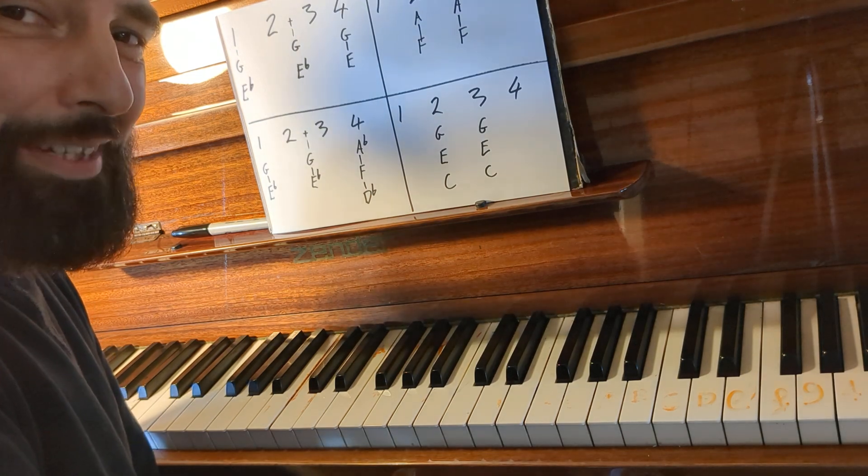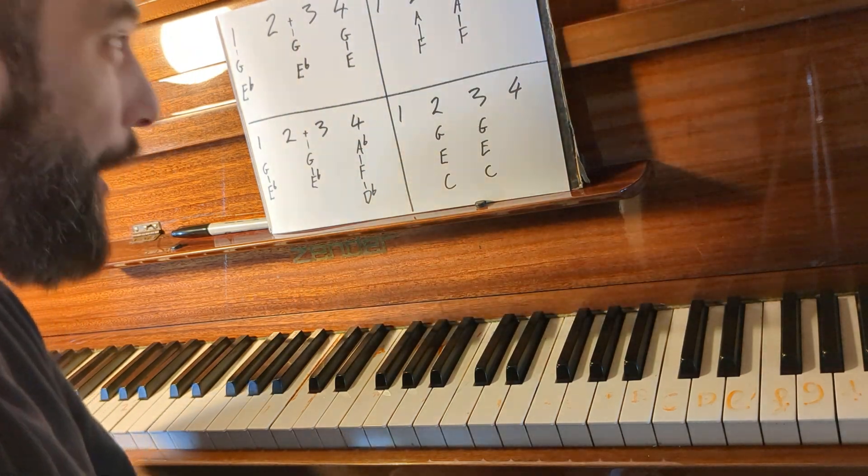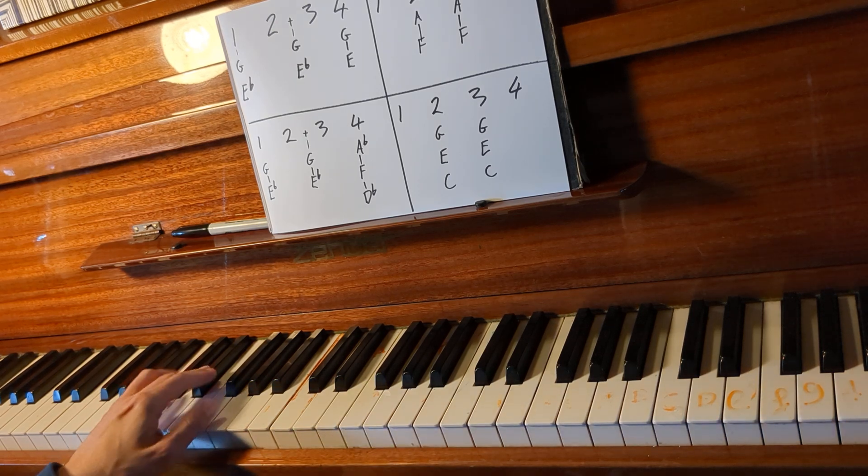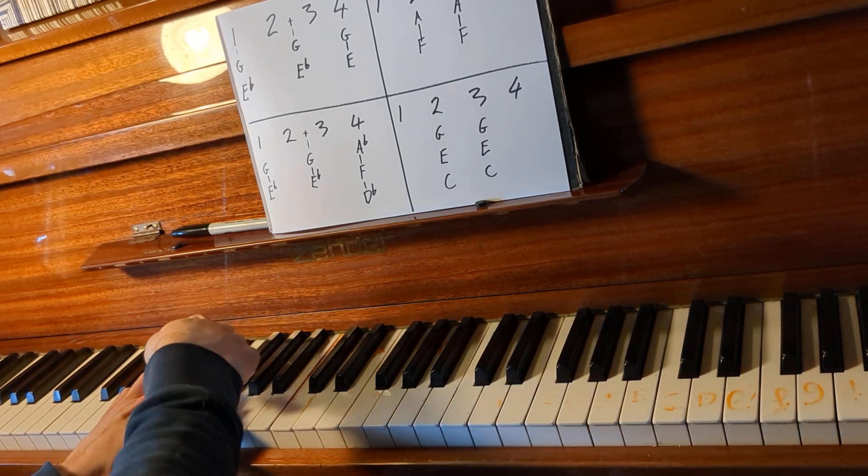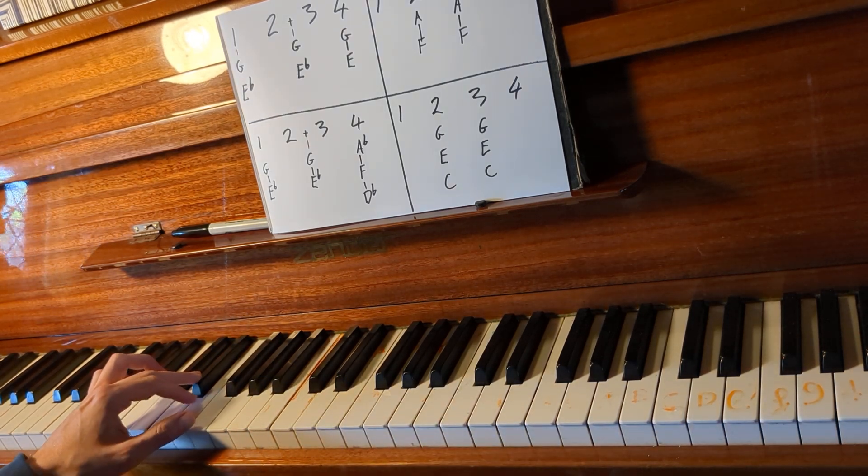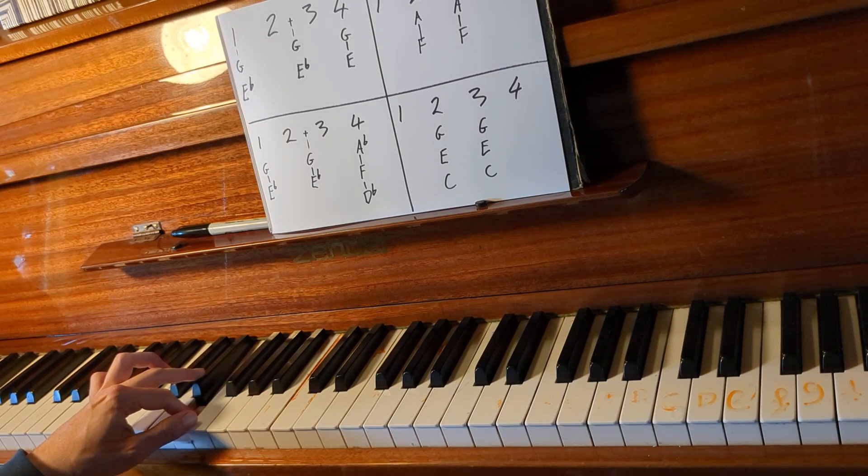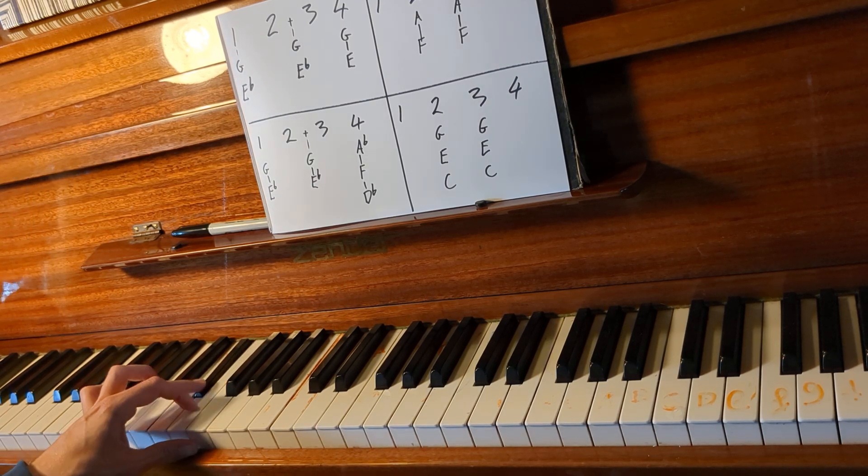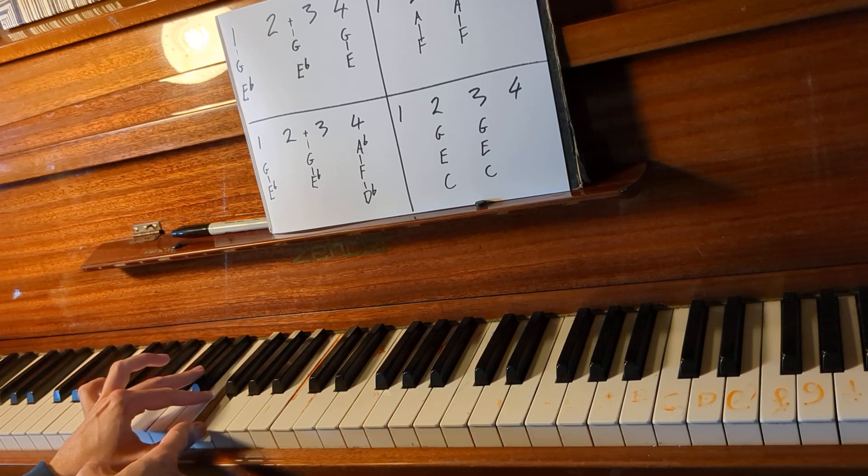Hi, this is how to play Trouble by Zayn, part one. We're going to begin with the left hand just to keep things simple. Put your middle finger on E flat. We're going to play three notes: E flat, E, and then F. We're going to play E flat twice, E once, and then F twice.